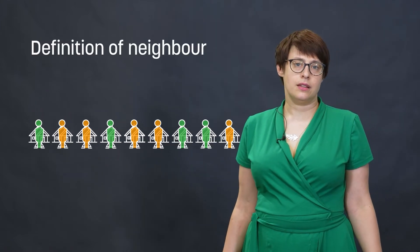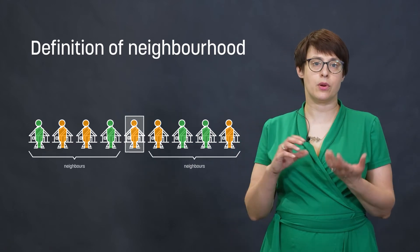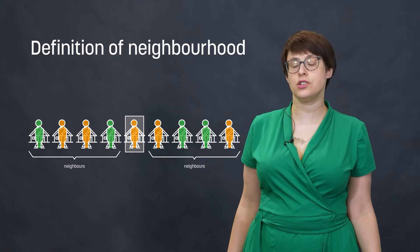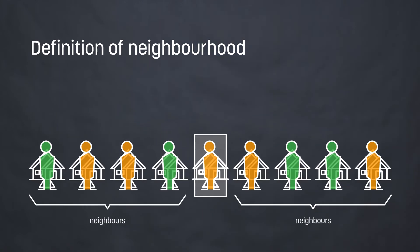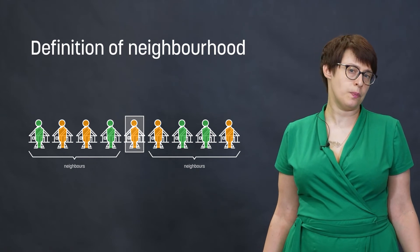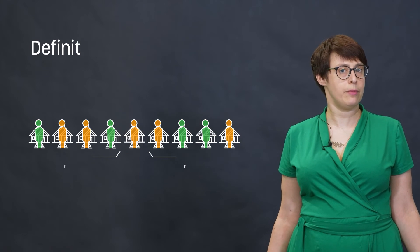We can also modify the definition of a neighborhood. For example, a neighborhood can be wider, like four neighbors on each side. This would make sense especially when our population is bigger and if we try to model a population in which more people know each other. Just think about your own neighborhood — how many of your neighbors would you really call a neighbor?